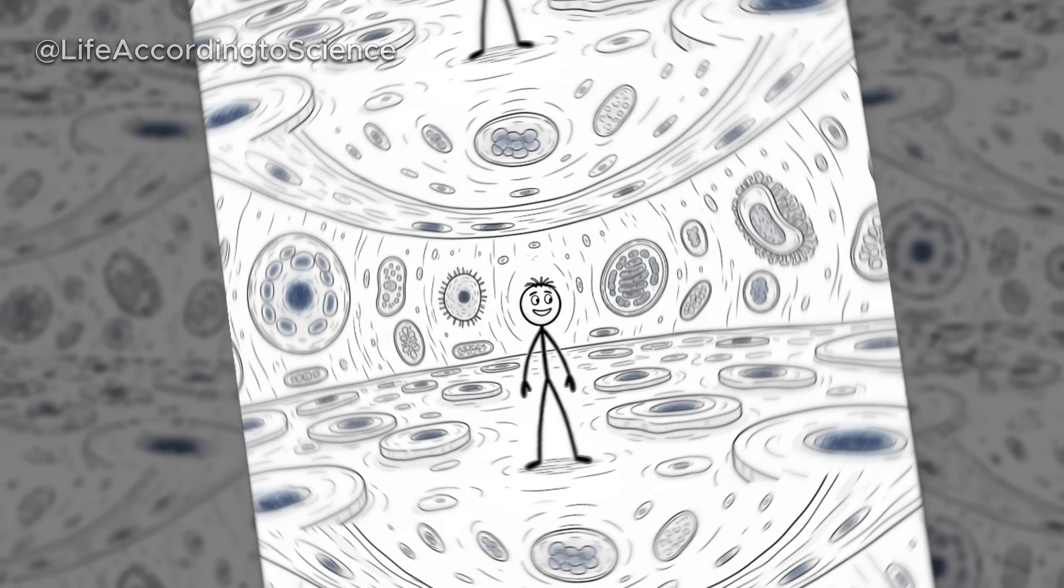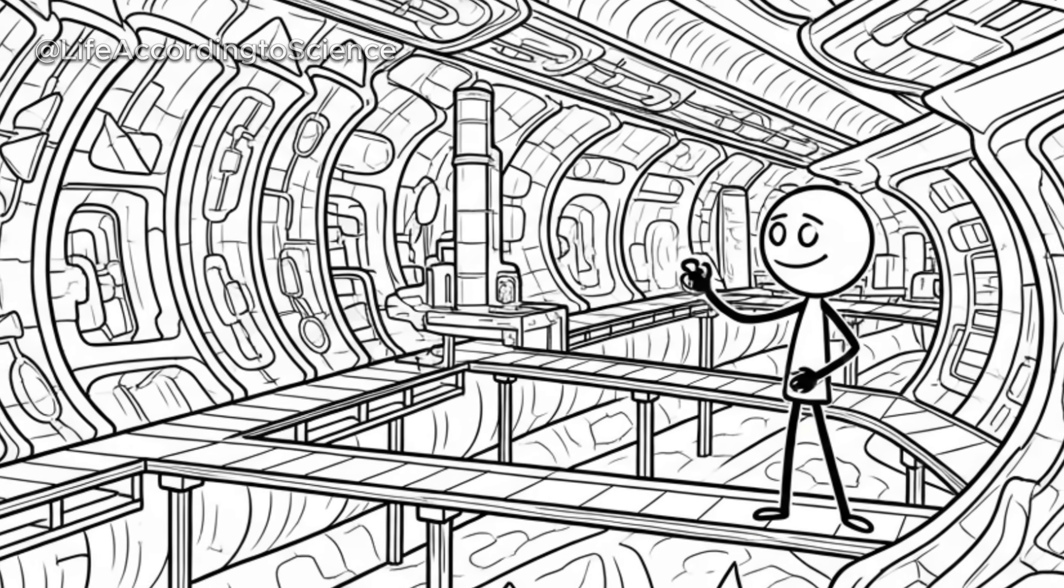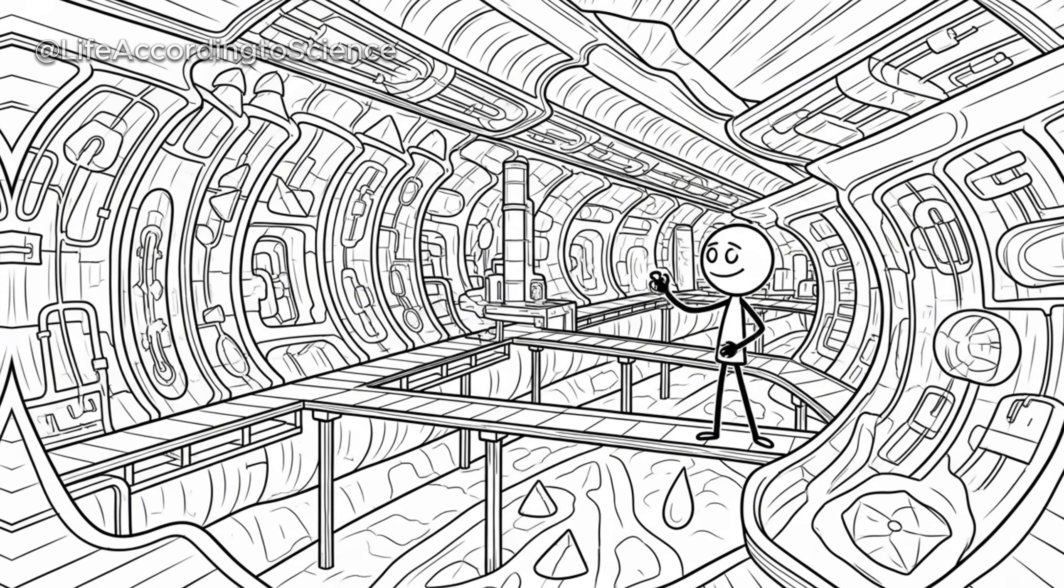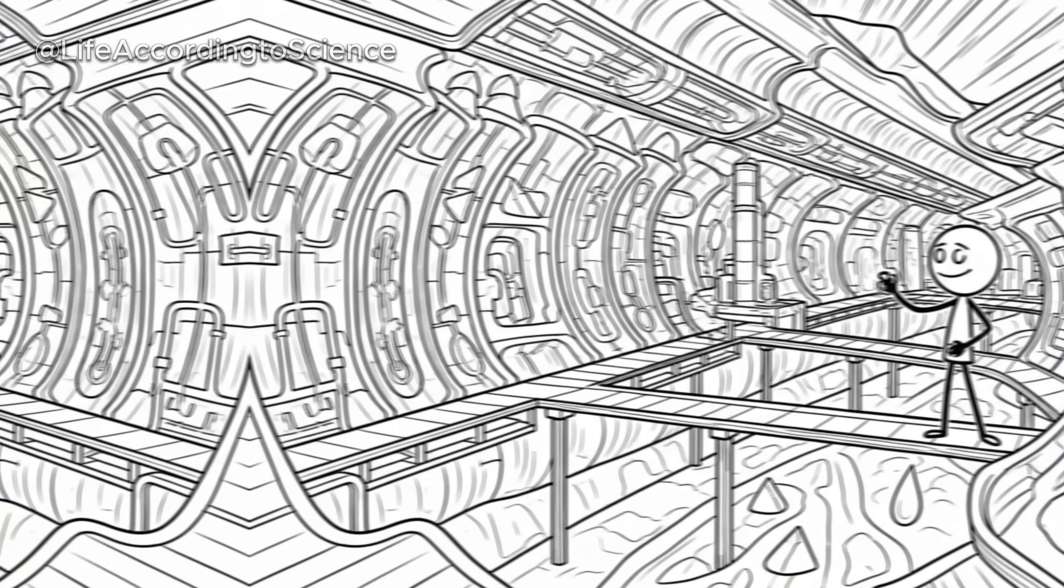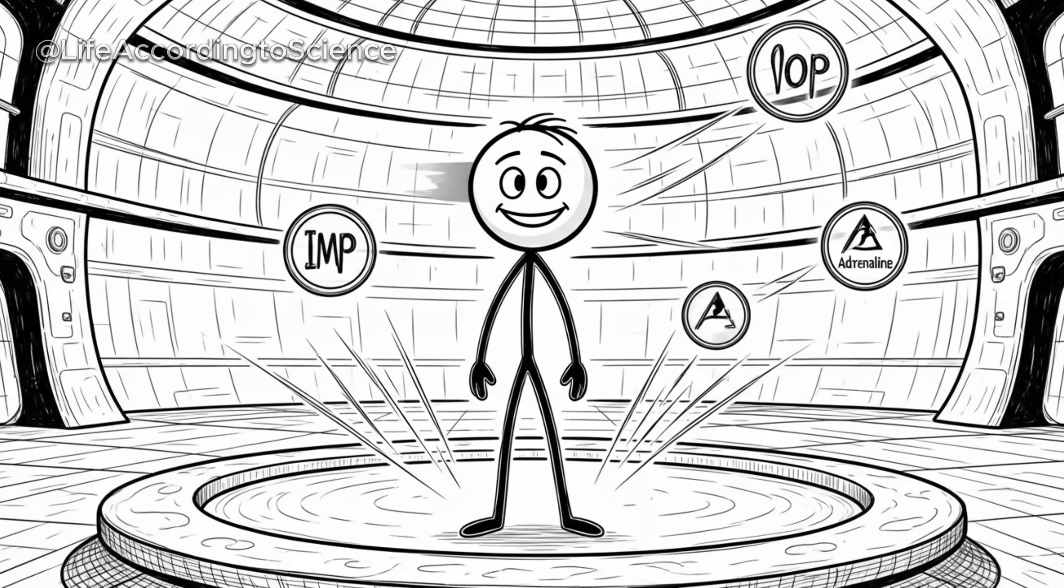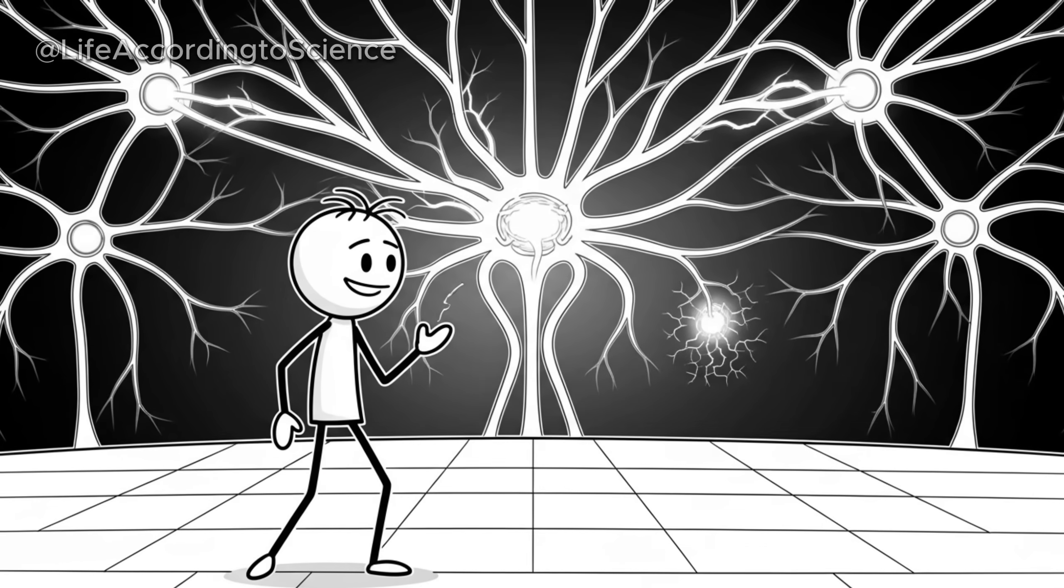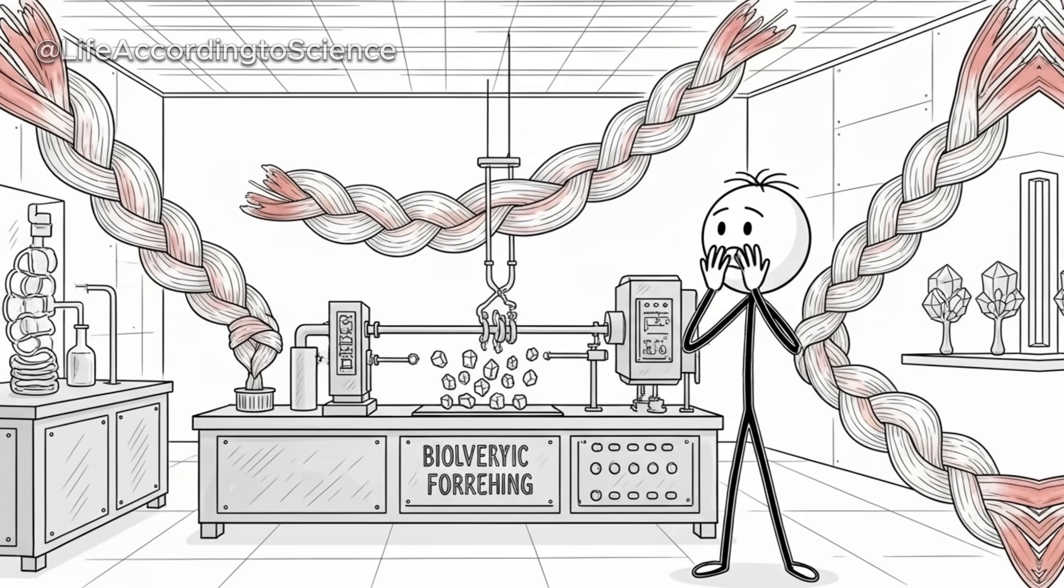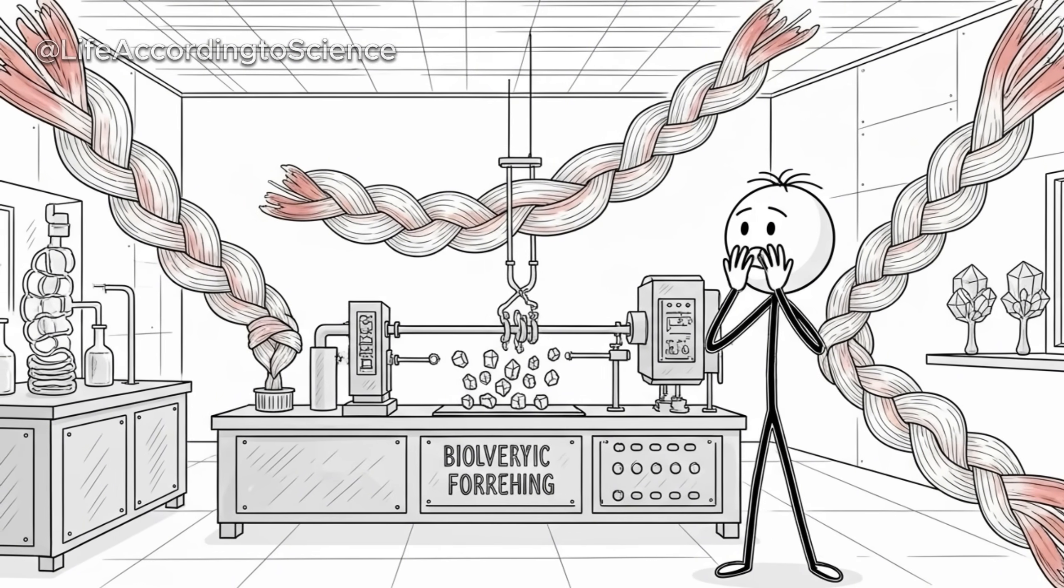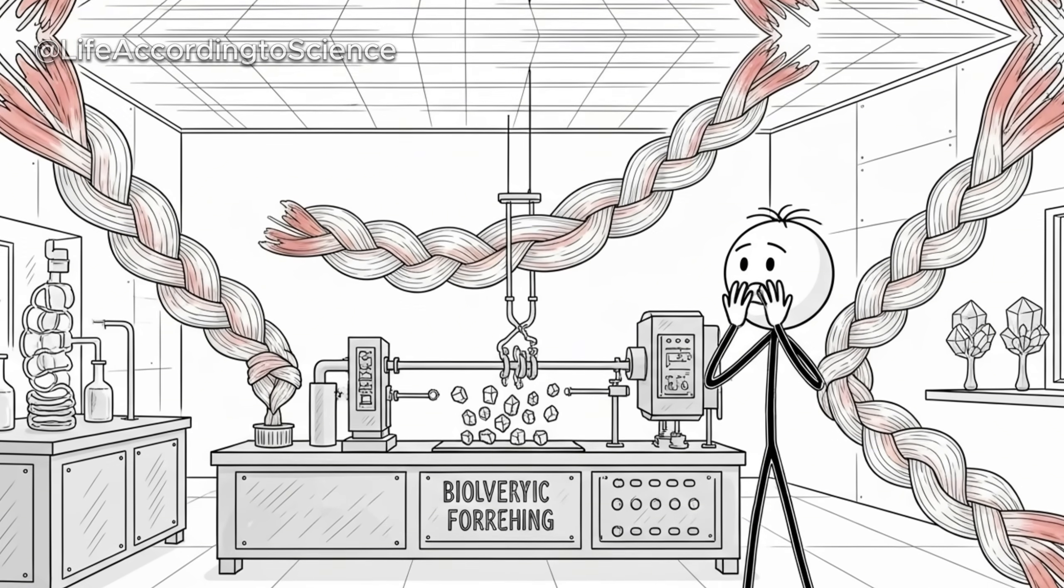Inside your body, every cell is suddenly faced with a challenge. There's less fuel coming in. Mitochondria, the cell's power plants, start optimizing energy use, switching from carbohydrates to fat. Hormones such as insulin drop, while glucagon and adrenaline rise, signaling your body to release stored fuel. Your brain remains the most demanding organ. Even though it represents only about 2% of your body weight, it consumes roughly 20% of your energy.